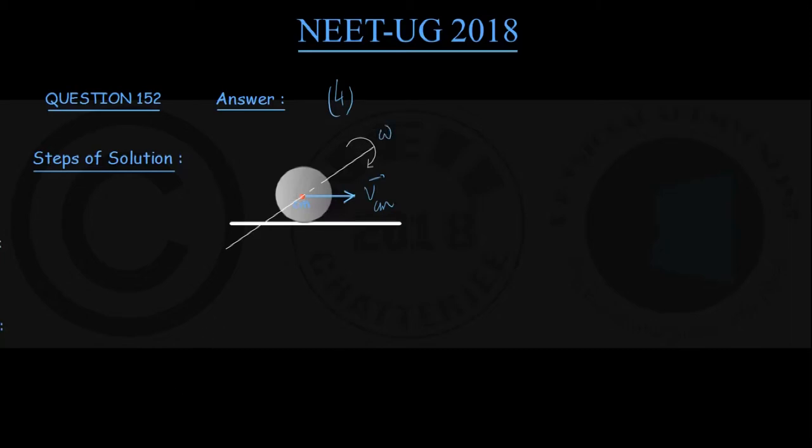So once again, quickly from this figure: rolling motion typically is a combination of two motions. One is translational motion of center of mass with a velocity VCM, and a simultaneous pure rotational motion of the body about a horizontal axis passing through center of mass with an angular velocity omega.